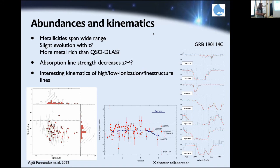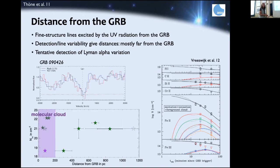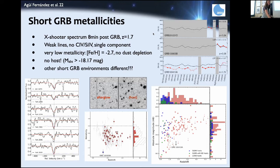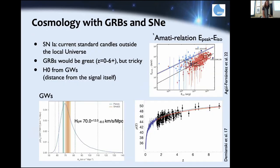My student has done this for the first time for a short GRB. Short GRBs are very difficult to get spectra from because their afterglows are fainter, making it very challenging. For cosmology: since GRBs are detected at very high redshifts, there have been many attempts to use them as cosmological probes. The most promising is the Amati relation — correlating the peak energy in the high-energy spectrum with total isotropic energy — allowing a kind of Hubble diagram.